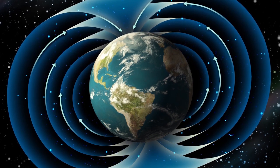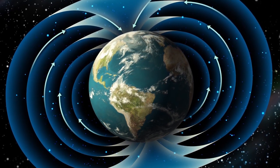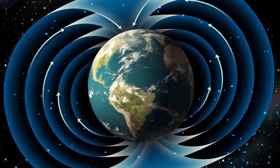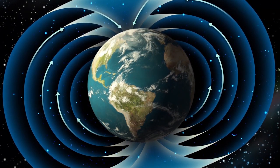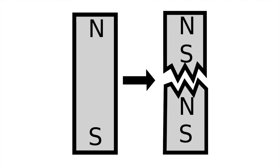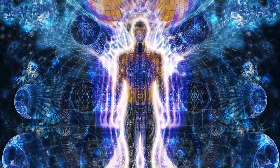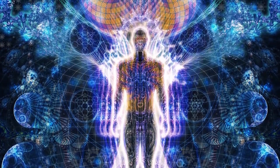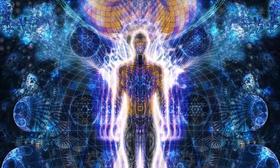Fields are inherently holistic. You can't have a slice of a magnetic field — you can't just cut a bit out of it. And if you cut a magnet in half, you don't get one half with a north pole and one half with a south pole; you get two complete magnets, each with a north and a south pole. This is a very important property because organisms are inherently holistic, and their abilities to regenerate are a little bit like the ability of a magnet to remain whole even if you cut it into pieces.